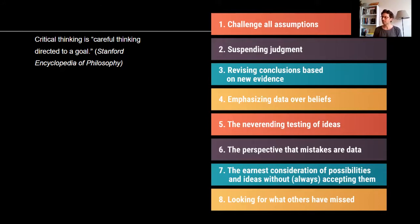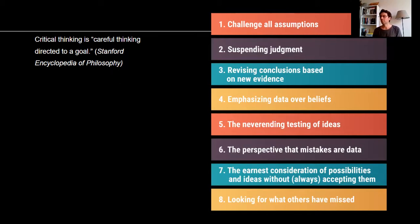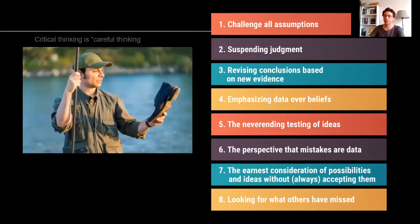The eighth aspect tells us that we should be looking for what others have missed. It's not only our own ideas we are following — we should also look at other ideas and what other people might have missed in their opinions or judgments. These are some suggestions for critical thinking.